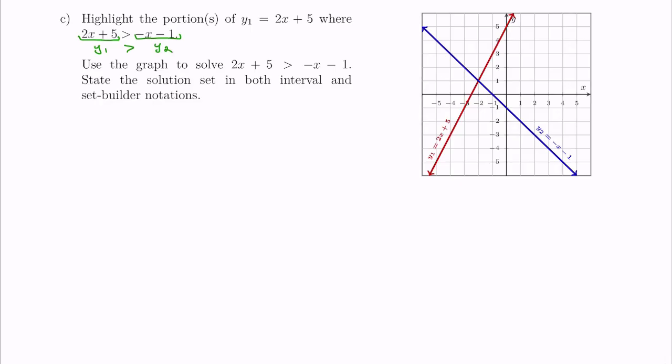Bringing this back to the lecture notes, we were asked to highlight the portions of y1 equal to 2x plus 5 where 2x plus 5 is greater than negative x minus 1. That happens on the second half of the graph — that entire portion where the red graph is vertically above the blue graph. So the y values there are greater than the y values on the blue graph, meaning 2x plus 5 is greater than negative x minus 1. We've now identified where y1 is greater than y2.